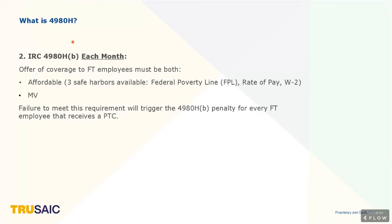Affordability generally means nine and a half percent of your household income. However, the IRS said that as an employer, they understand you don't know household incomes — you only have the employee's income. So the IRS established safe harbor methods, and said if you use one of the three safe harbors you will be safe. If you don't charge more than generally nine and a half percent — and again that number changes every year — based on the federal poverty line, their rate of pay, or W-2, then they will consider that an affordable offer.